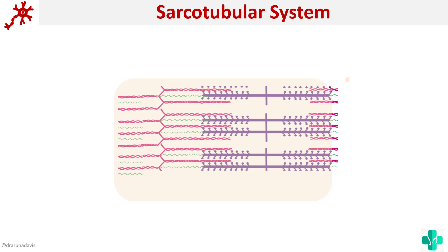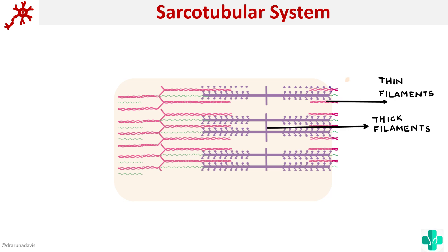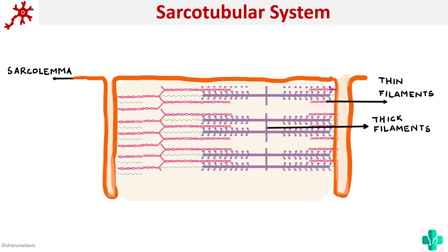The sarco tubular system is a membranous structure that surrounds the myofibrils. Suppose this is a muscle fiber — we have the thick and thin filaments, actin and myosin, and it is covered by the sarcolemma. The sarcolemma invaginates deep into the muscle fiber, especially at the AI junction — the junction between the thick and thin bands.